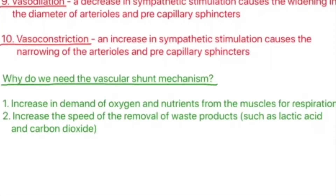Before we jump into the physiology of the vascular shunt mechanism, we need to understand why our body has evolved this over many generations. Firstly, when you're exercising, you have an increased demand for oxygen and nutrients at the muscles because they need to do respiration, whether anaerobic or aerobic. Secondly, you're making more waste products, so you need to increase blood flow to those areas to increase the speed of removal of waste products such as lactic acid and carbon dioxide — to delay the onset of blood lactic accumulation.